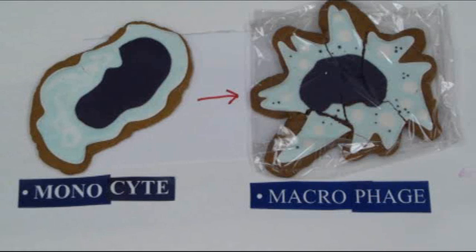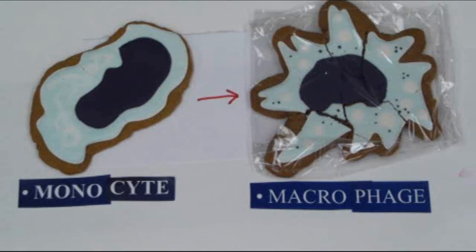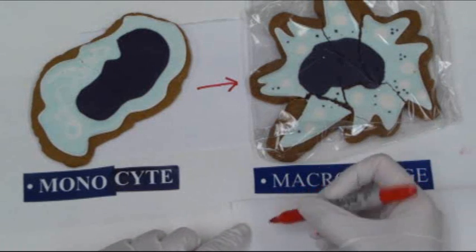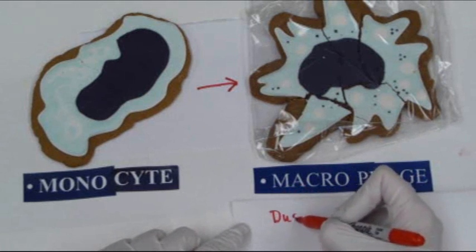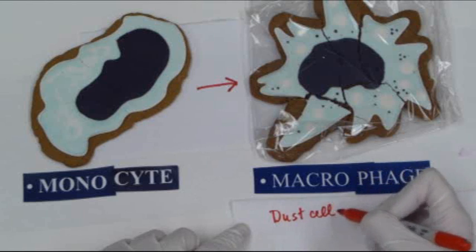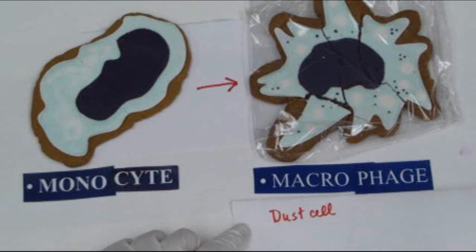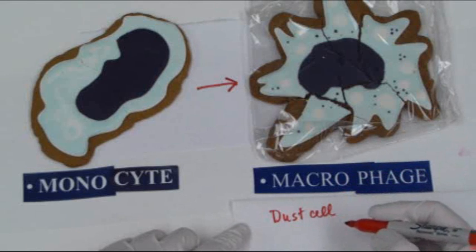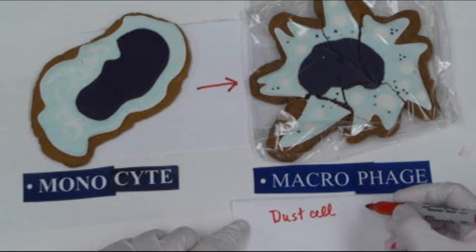Macrophages can also become fixed within certain tissues, and once they are in those tissues we give them very specific names. One example is the dust cell in the lung, because when you breathe you sometimes breathe in dust, and macrophages are able to engulf and digest that dust.